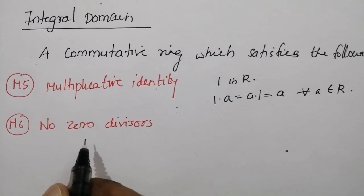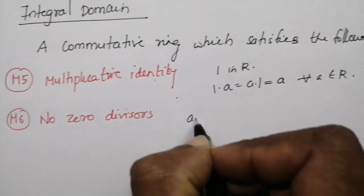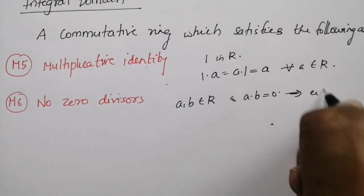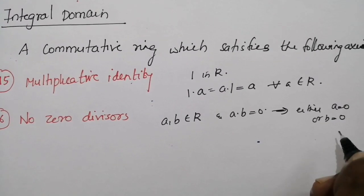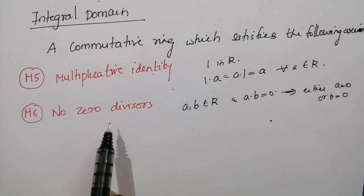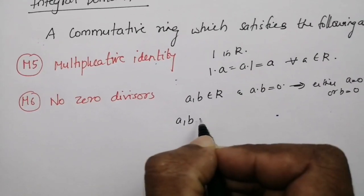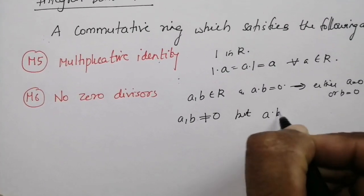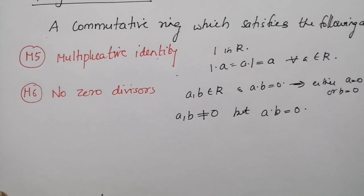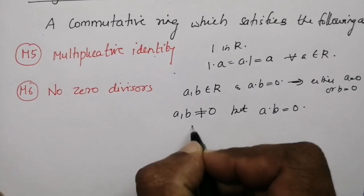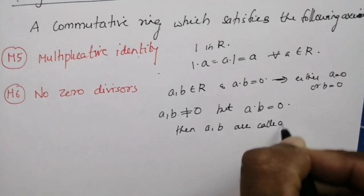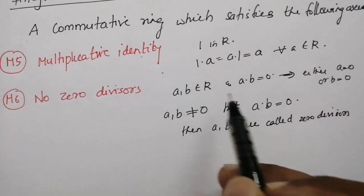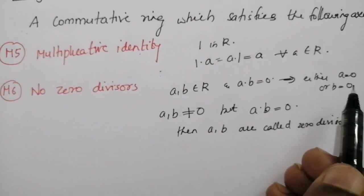The next property is no zero divisors. No zero divisors means: if a, b belong to R and a·b = 0, then this implies either a = 0 or b = 0. In other words, suppose a ≠ 0 and b ≠ 0, but the product a·b equals 0 — then a and b are called zero divisors. In the case of no zero divisors, a·b = 0 only if either a = 0 or b = 0.